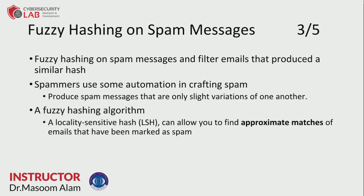This hashing algorithm allows you to find approximate matches of emails previously marked as spam. For example, suppose you have the string in a spam email: 'you have won a lottery.' In a test email you want to check, you have the string: 'you have a new lottery' — only the word 'new' is added. Exact string matching would return false because both strings are not equal. With fuzzy hashing, both strings are approximately equivalent, so it returns true.